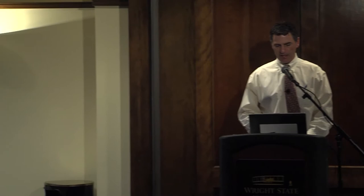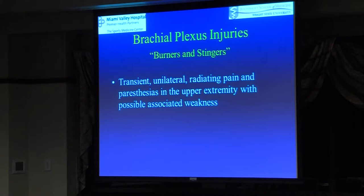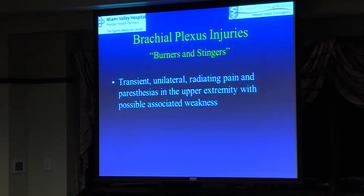Moving on — brachial plexus injuries and burners and stingers. These are far more common than anything else we've talked about. A stinger or burner is a transient unilateral radiating pain and paresthesias in the upper extremity with possible associated weakness. Typically it's football players — centers, interior linemen — who have an impact and their arm just drops, completely dead. They can't feel it or it's numb and tingling; they can't elevate it. They run off the field with their arm hanging low, and usually in just a few minutes it starts to work again. They go back in and play and don't tell anybody.